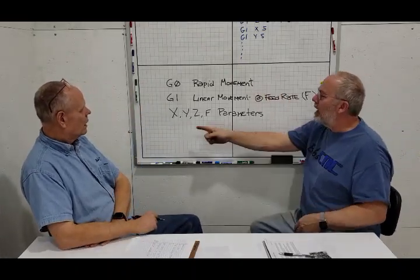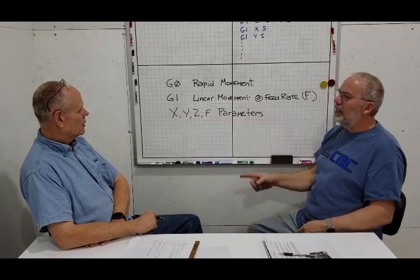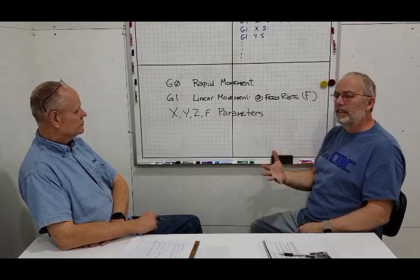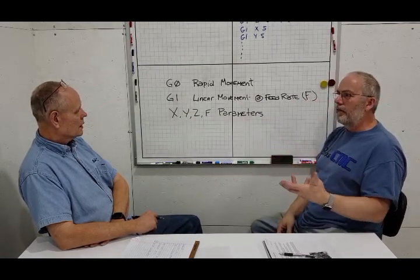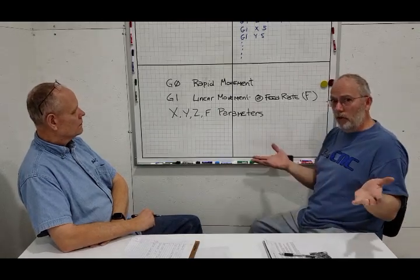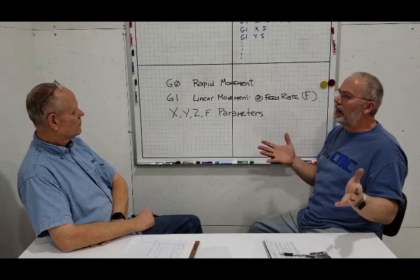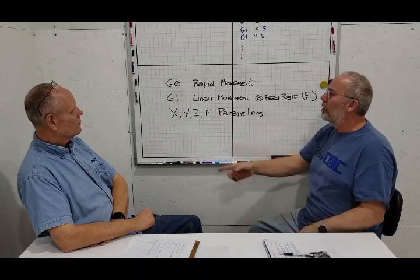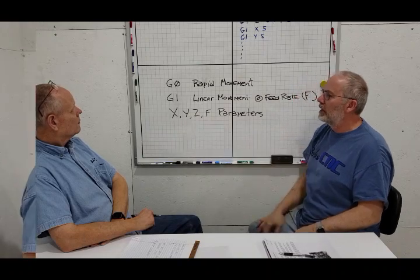So with these commands, you're going to have some parameters X, Y, Z, and F, right? This is the coordinate system and how far you're moving. So when you say G-1, you have to tell it you want to move at a feed rate, but where do you want to move? I want to move this far to the X, this far to the Y, and this far to the Z.